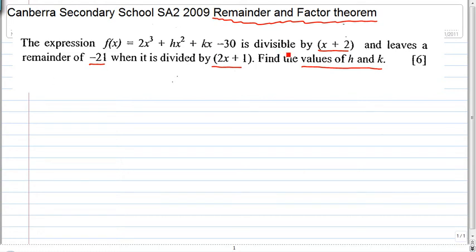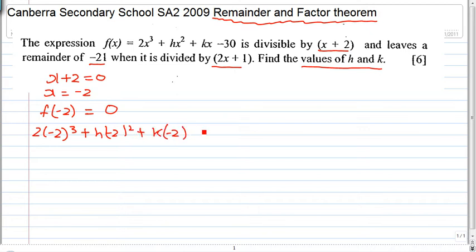When it's completely divisible by x plus 2, it means that x plus 2 is a factor. So x plus 2 equals 0, x equals to minus 2. So f(-2) is equal to 0. Let's perform a substitution and sub minus 2 into x. So 2(-2) cubed plus h(-2) squared plus k(-2) minus 30, and that's equals to 0.